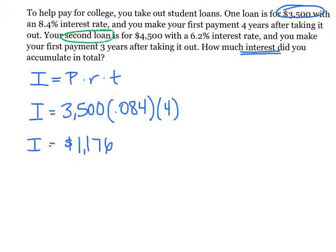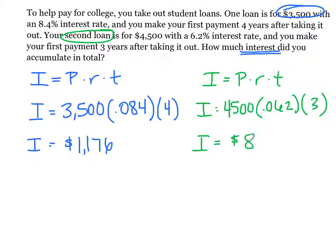Our second loan follows the same process. We need to know the interest on it. So I equals P times R times T will equal P is $4,500, its rate .062, and how many years it's at? Three years. The interest accumulated on our second loan is $837.